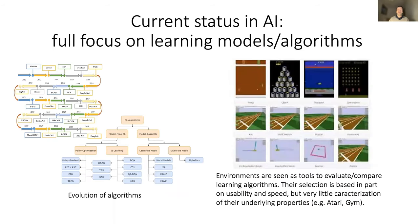If one observes the recent history of AI and the deep learning area in particular, what one observes is that research has been mostly organized and focused around developing new learning algorithms, new neural architectures, trying to understand what kind of architectural biases are needed for such or such capacities. A lot of effort has also been put in designing benchmarks where environments are seen as tools to evaluate and compare these learning algorithms.